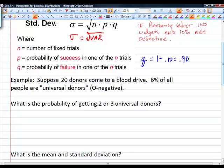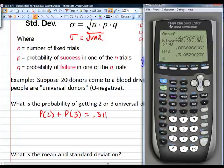Here's an example problem. Suppose 20 donors came to a blood drive and 6% of the people are universal donors. What is the probability of getting two or three universal donors? We just did that in the last section. That was the probability of getting exactly two successes plus the probability of getting exactly three successes, which was 0.311.